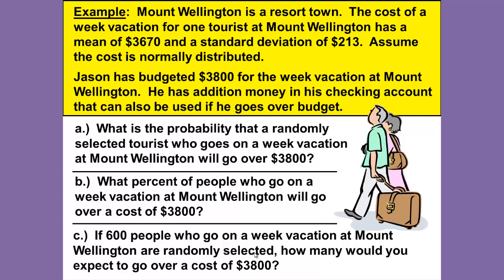Mount Wellington is a resort town. The cost of a week vacation for one tourist at Mount Wellington has a mean of $3,670 and a standard deviation of $213. Assume the cost is normally distributed.